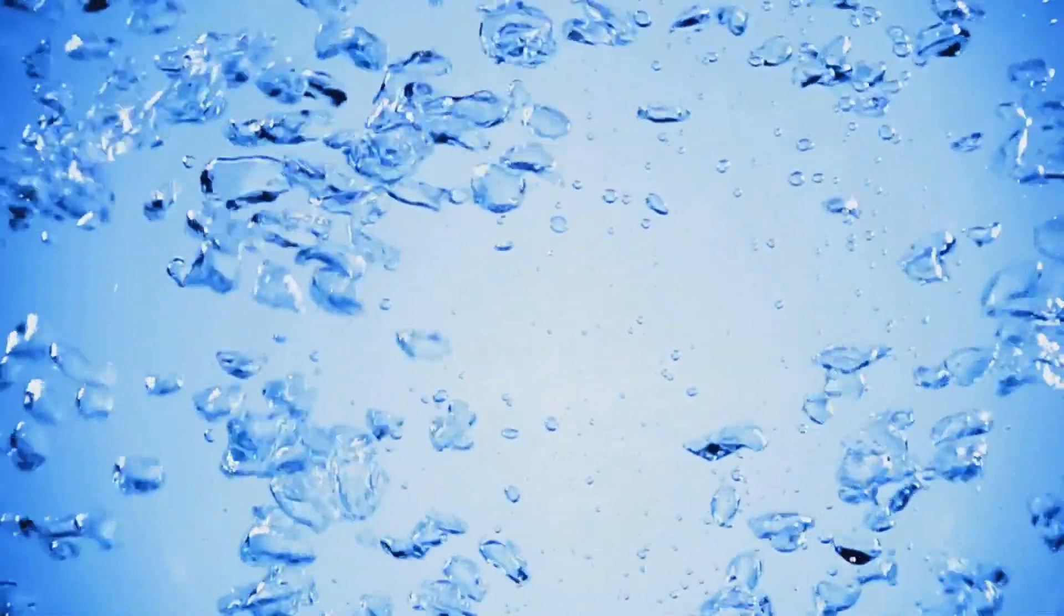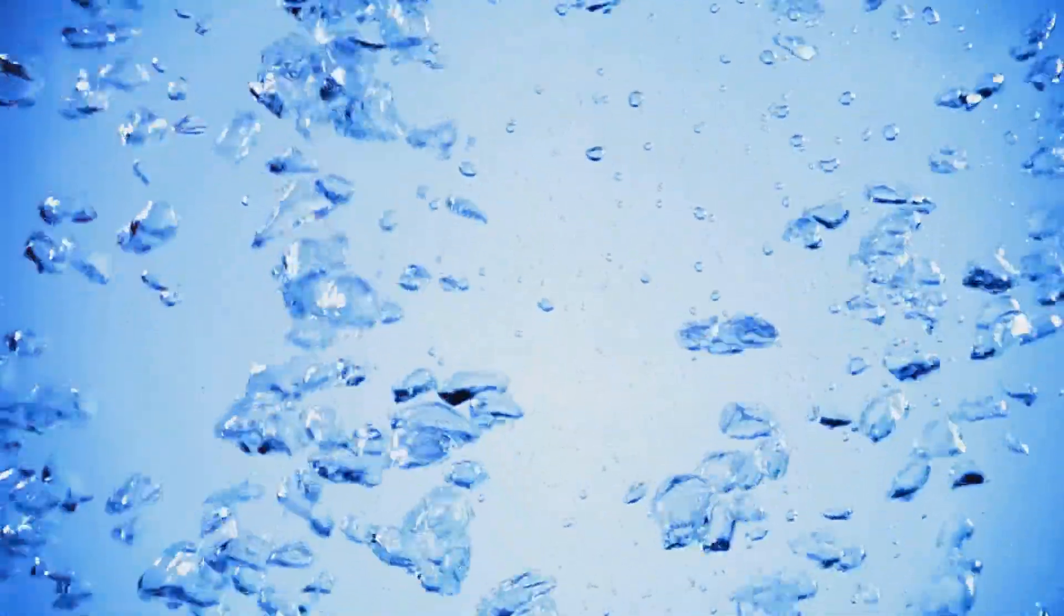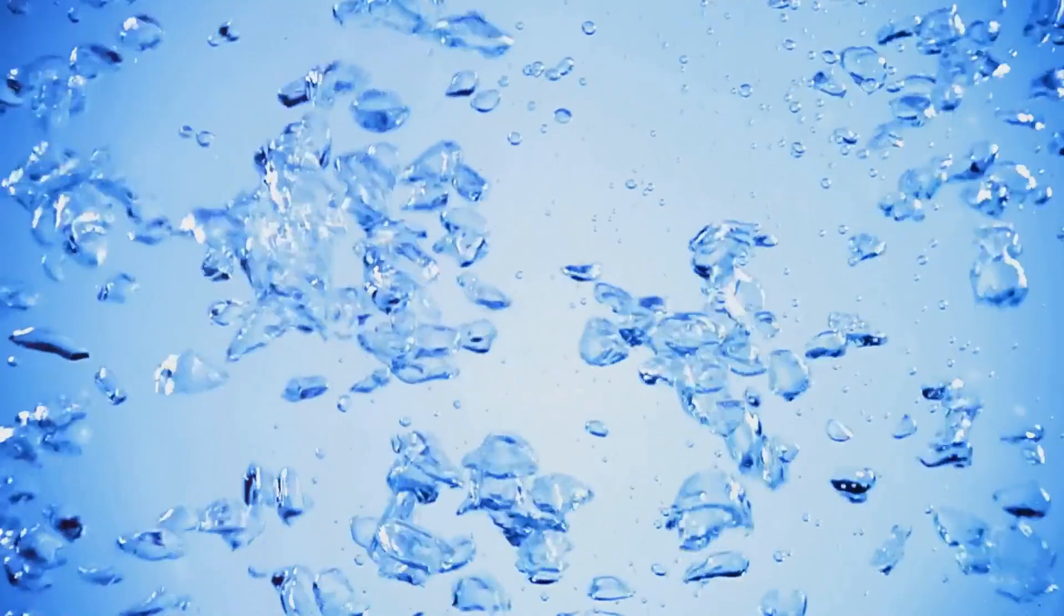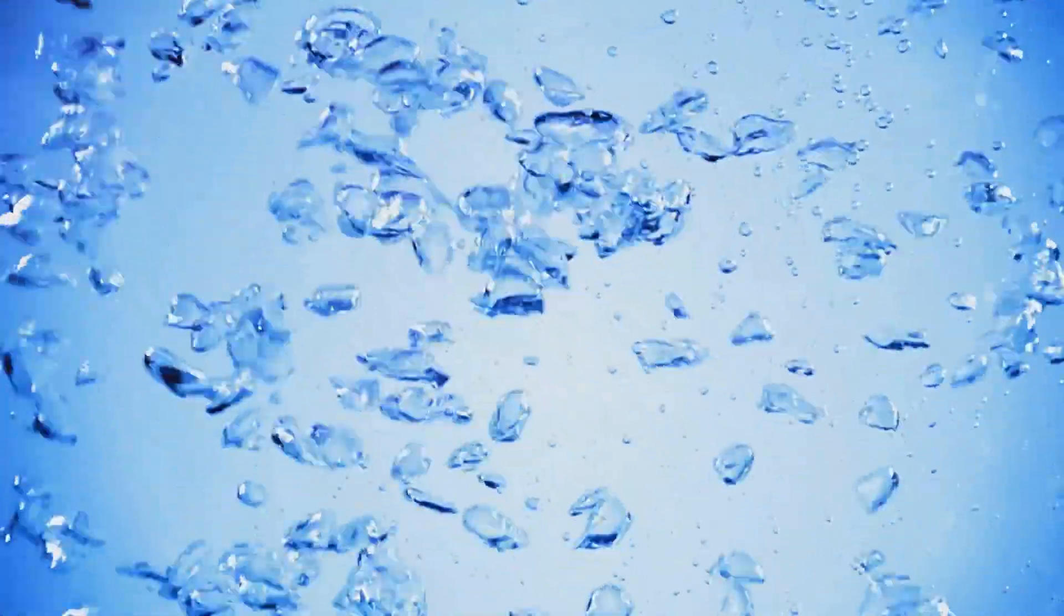We equals rho times V squared times L divided by sigma. This formula might seem complex at first, but breaking it down makes it easier to grasp. Here's what each symbol means. We is the Weber number, with no units. It's a dimensionless number, meaning it has no physical units attached to it.